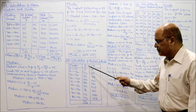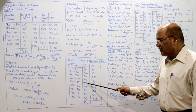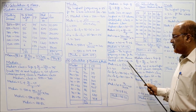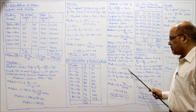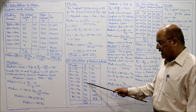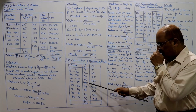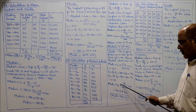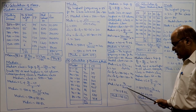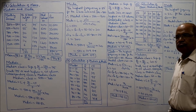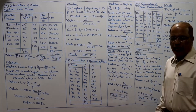Now calculate mode. By inspection, the highest frequency is 180, against the class 40–50. Modal class = 40–50. Mode = L + [Δ1/(Δ1+Δ2)] × I. L=40, Δ1=180−106=74, Δ2=180−164=16, I=10. Mode = 40 + [74/(74+16)] × 10 = 40 + 8.22 = 48.22. That is the mode. 19th problem completed.